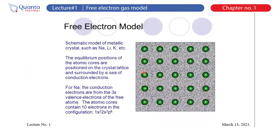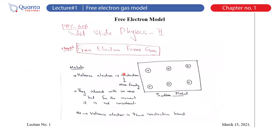Let's move to today's lecture about the free electron gas model. Consider a metal like sodium — sodium has 11 electrons and one electron is in the last shell, the 3s orbital. Because the distance from the nucleus increases, the force of attraction between the nucleus and the outermost shell becomes weaker. In case of metals, these electrons are nearly free electrons.